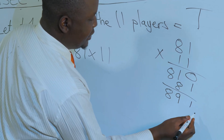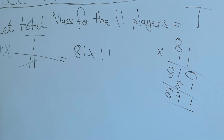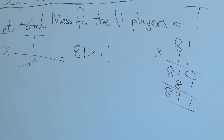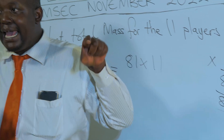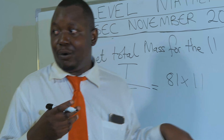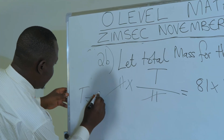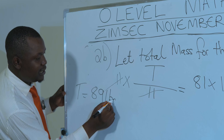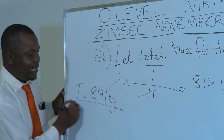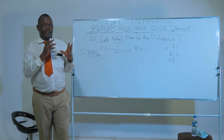81 multiplied by 11 gives eight hundred and ninety-one. So the total mass for the 11 players is 891 kilograms. Now let's go on to the next part of the question.